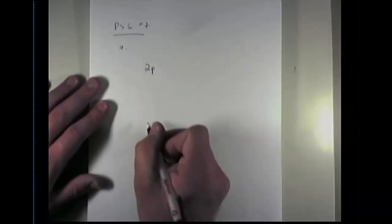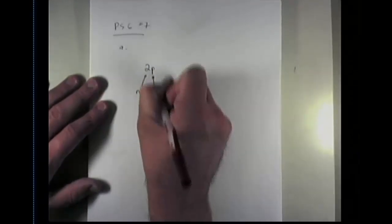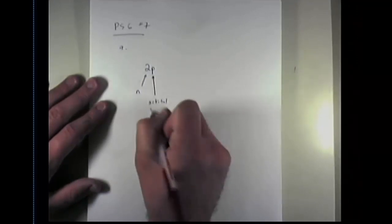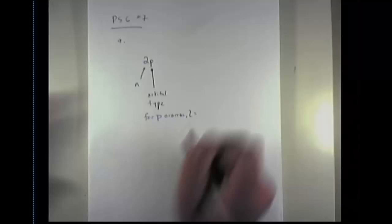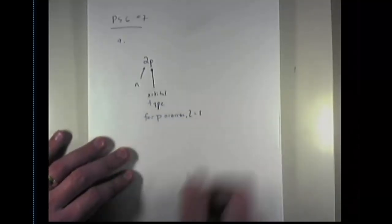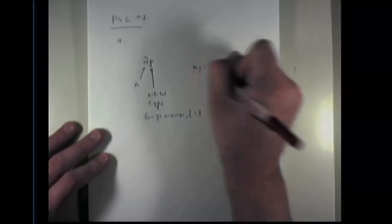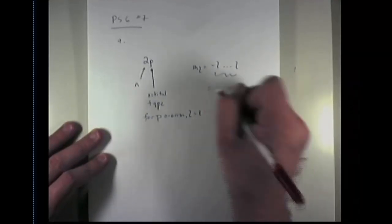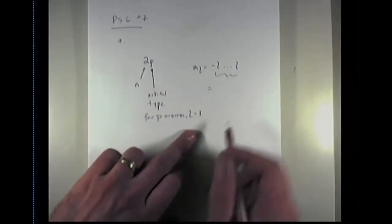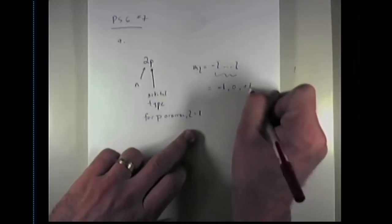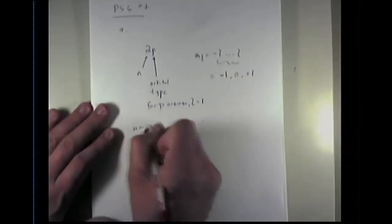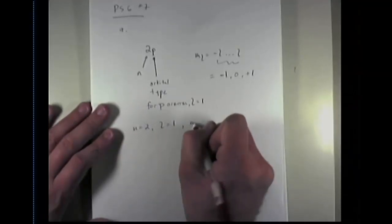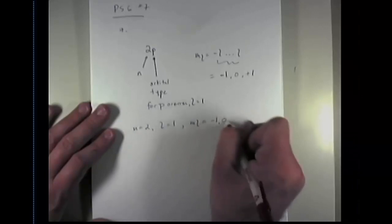Part a asks us to come up with n, l, and m sub l values for each orbital in the 2p subshell. So I'm going to write 2p. Now remember, 2, this first number, is the n number. p tells us the orbital type. We have to remember that for a p orbital, l equals 1. Then m sub l equals negative l to l, all of the integers in between. So m sub l could equal in this case, because l is 1, it could be negative 1, 0, and positive 1. So here's the answer: n equals 2, l equals 1, and m sub l equals negative 1, 0, or positive 1.